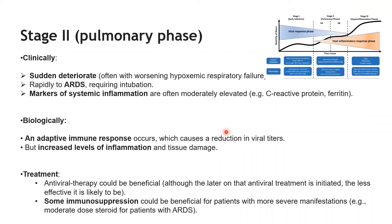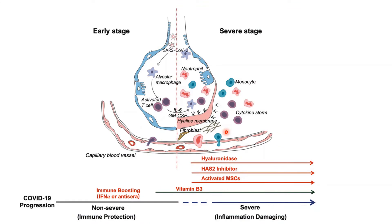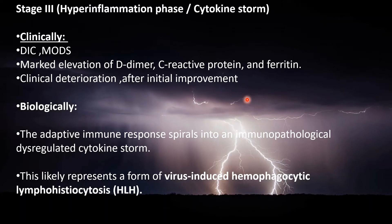In Stage 3, there will be more damage in the alveoli with a lot of inflammatory mediators. We have the cytokine storm. Clinically, this can be diagnosed based on DIC and MODs. There will be high elevation of D-dimer, CRP, and ferritin. Clinical deterioration may occur after an initial improvement. Biologically, this is an adaptive immune response leading to a dysregulated cytokine storm.